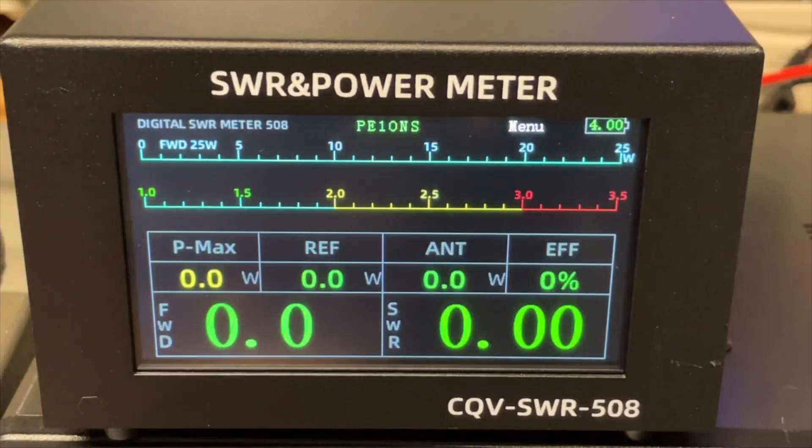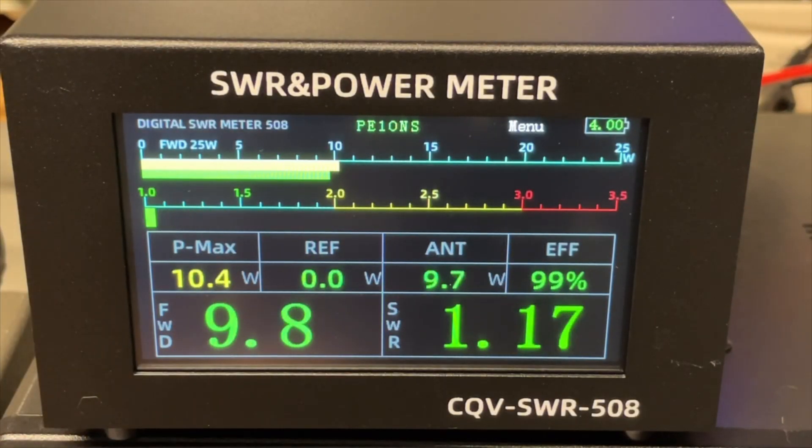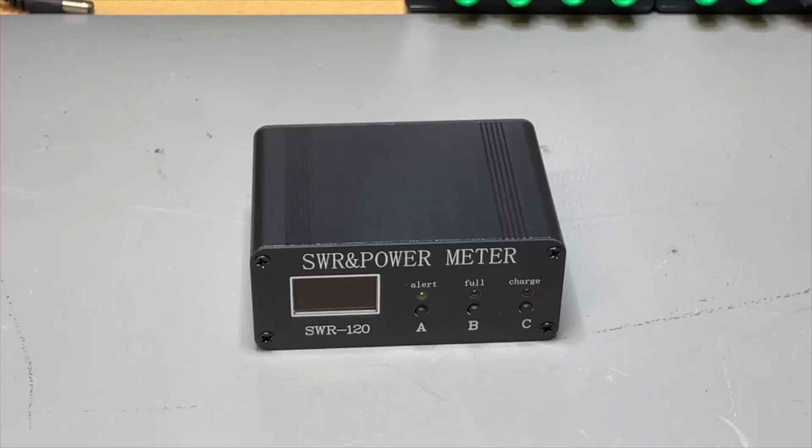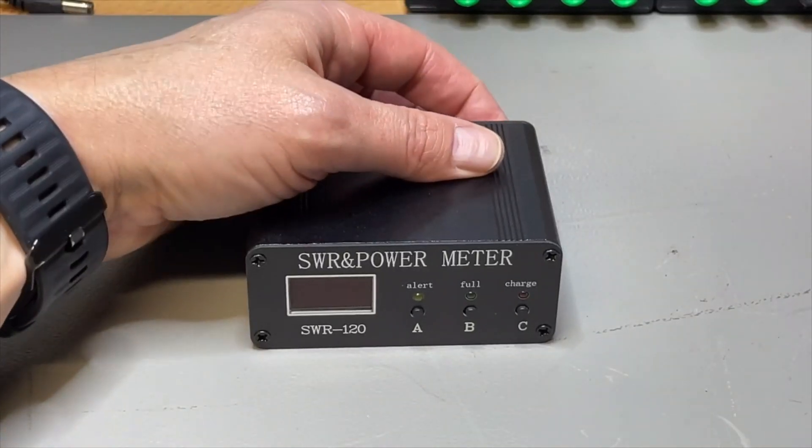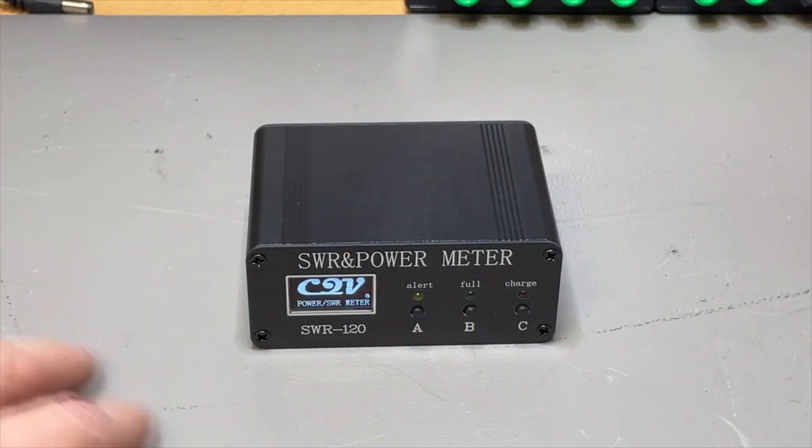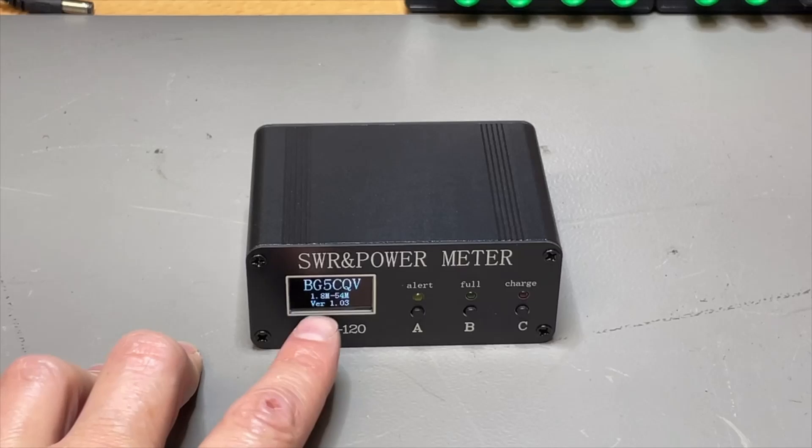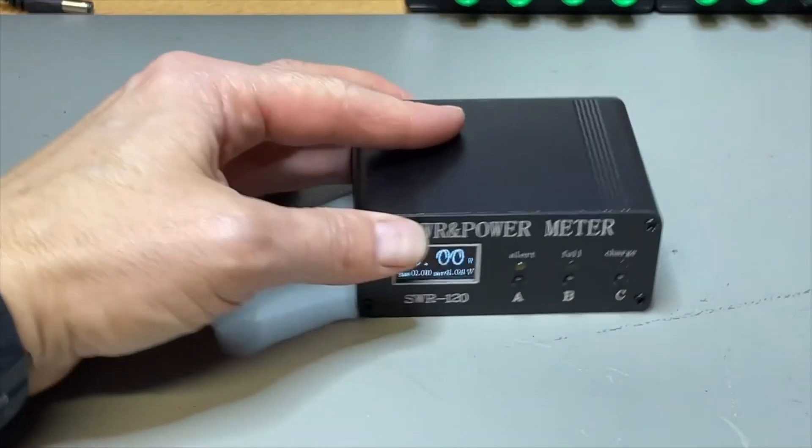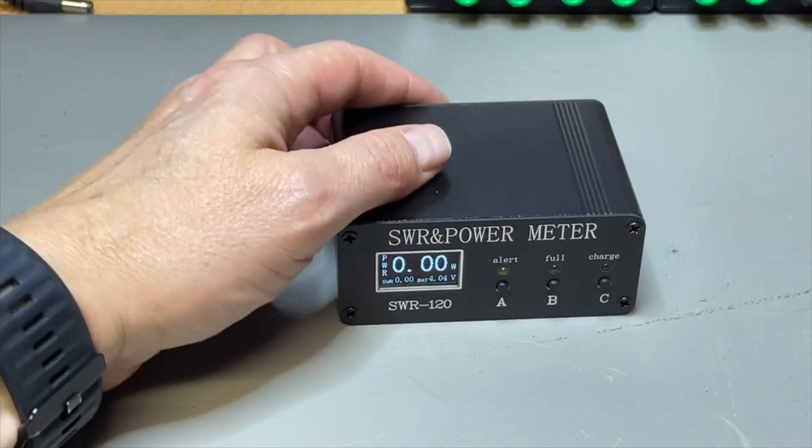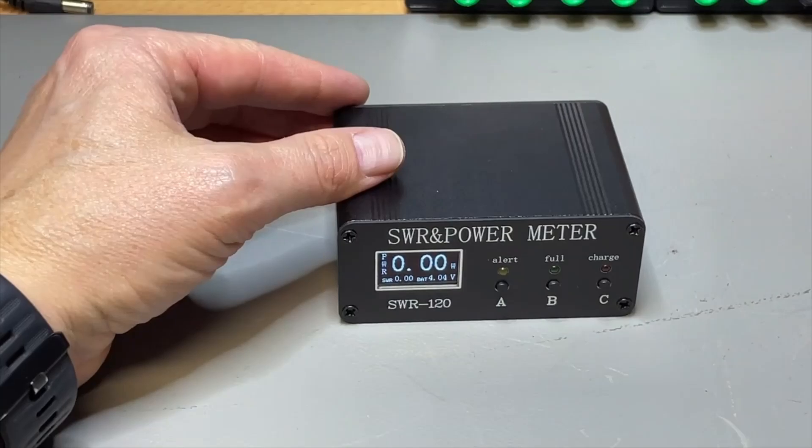So let's have a look. Well, here we have the small SWR-120. Very nice, very popular. There were a few different models but it is from CQV. Very popular for mobile use and it's just nice because it's so compact.